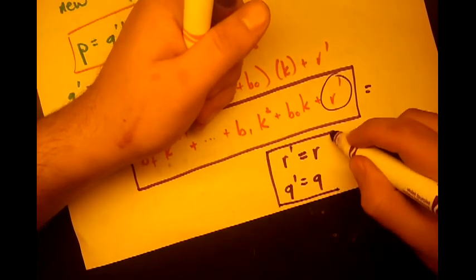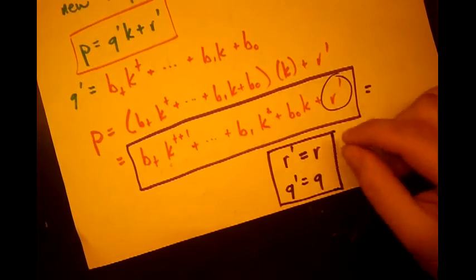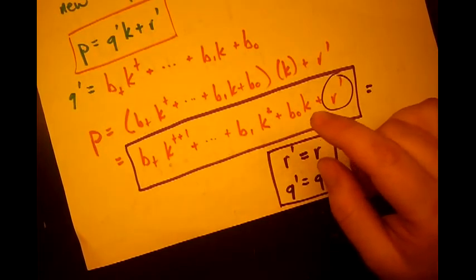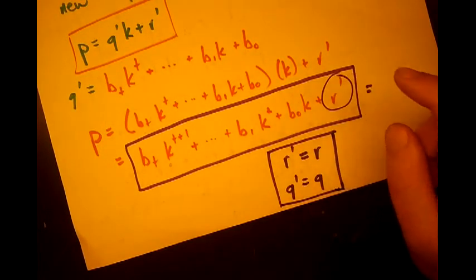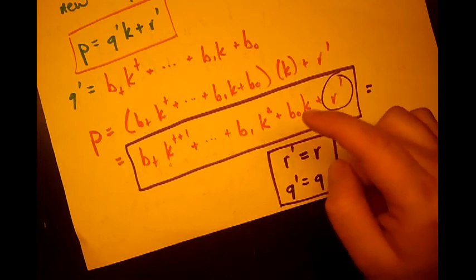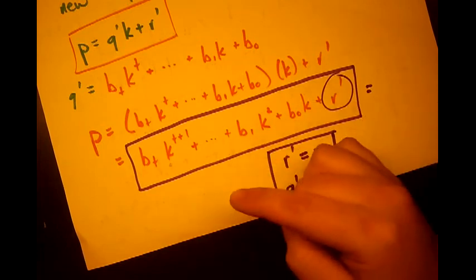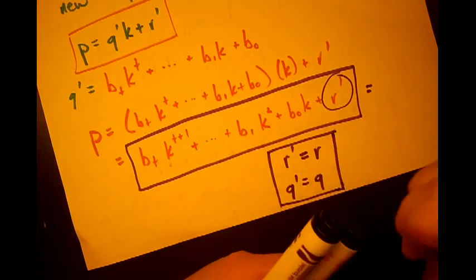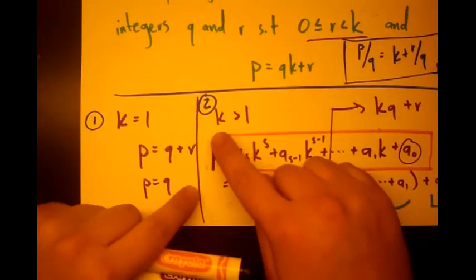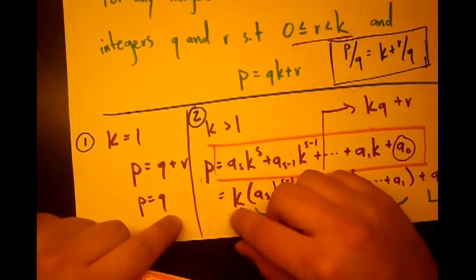now we've shown that if we assume that there's more than one set of q and r that can satisfy our equation, that's not possible. Because then r equals that new r, and q equals that new q. So we've proven that there's only one possible representation for our case number two, where k is greater than one.